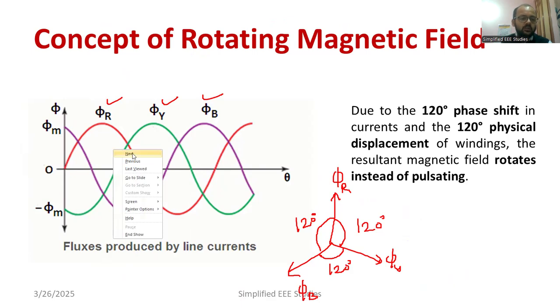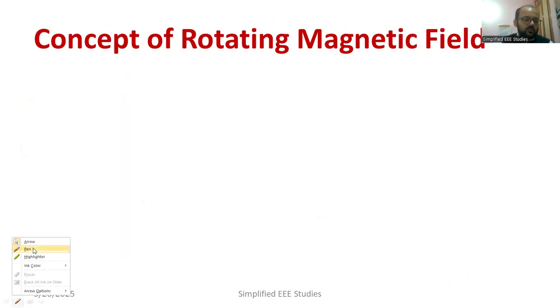Moving further, first of all, you have to consider Φ_R. Let us consider Φ_R. I will be writing using black color. Φ_R, there is a small derivation. What is the value of Φ_R flux? I need to calculate. So let me write Φ_R equal to Φ_M into sin ωt. That is nothing but Φ_M sin θ. Omega t is nothing but theta, right? Φ_R.